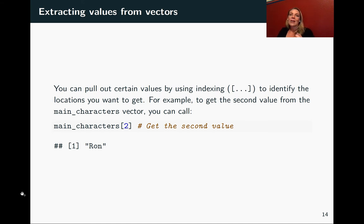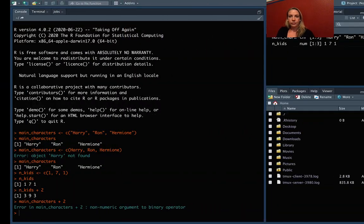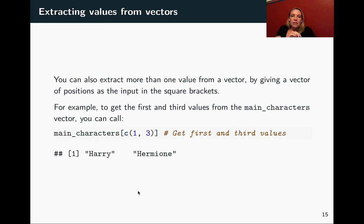The last thing for vectors right now is how, if you have a vector, you can pull out certain pieces of it. For this you'll use square bracket indexing. You put the name of your object followed by square brackets, and inside you put a number or a vector of numbers indicating which positions you want to pull out. The first element counts as 1, the next is 2, and so on — that's different from some other languages that start indexing at 0. So `main_characters[2]` pulls out the second value. You can also put a vector inside the brackets to extract multiple positions at once.